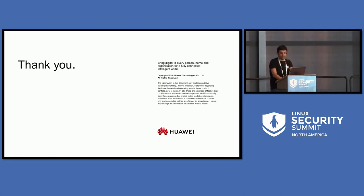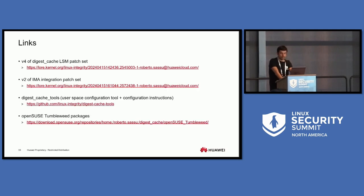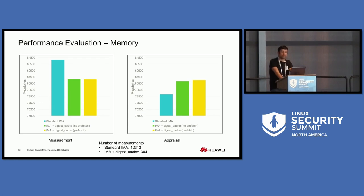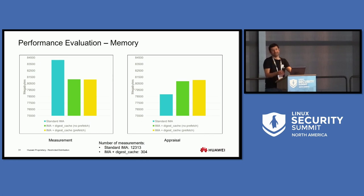An audience member noted that in the memory consumption graphs the vertical axis does not start at zero, so the difference is not as large as it may appear. The speaker acknowledged this: if the full scale were shown, the difference would not be visible, and agreed one should always warn when a graph axis does not start at zero since many people assume it does.